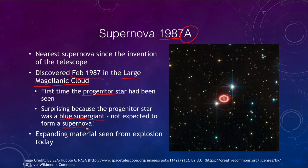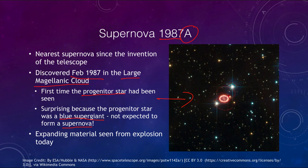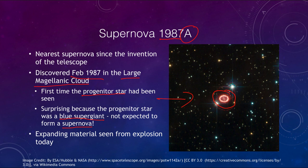What was confusing to many astronomers is that the progenitor star was a blue supergiant, not the red supergiant type previously expected to form a supernova at the end of its life. A blue supergiant was not expected to do this, so it is still causing us to better understand how supernovae work — something we are still striving to understand. In the Hubble Space Telescope image we can see the material still beginning to expand. This is much more recent than the other supernovae that occurred nearly a thousand years ago, and astronomers will continue to map it over the coming decades.